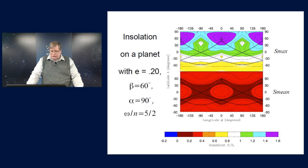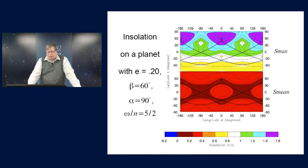Meanwhile, we can draw some lessons from all this. So we know that extrasolar planets could be in a wide variety of spin states. We don't know, but the dynamics indicate that there are a lot of possibilities. Also, I've shown you that these unconventional rotations cause pretty complicated patterns of insolation across the surface of a planet. As a general rule, these unusual insolation patterns produce a milder climate because the insolation is more broadly distributed, and you might expect that to improve a planet's habitability as well.